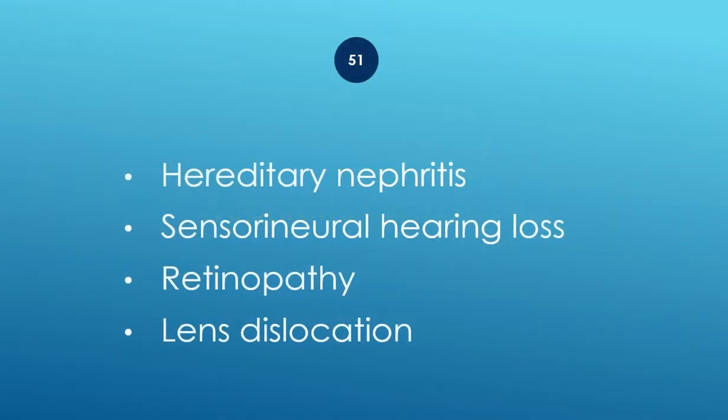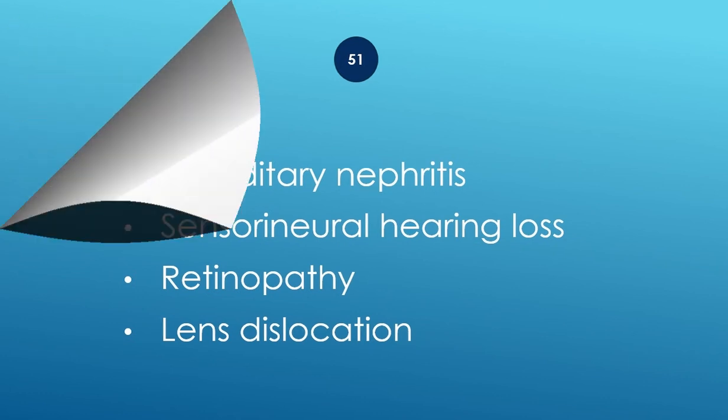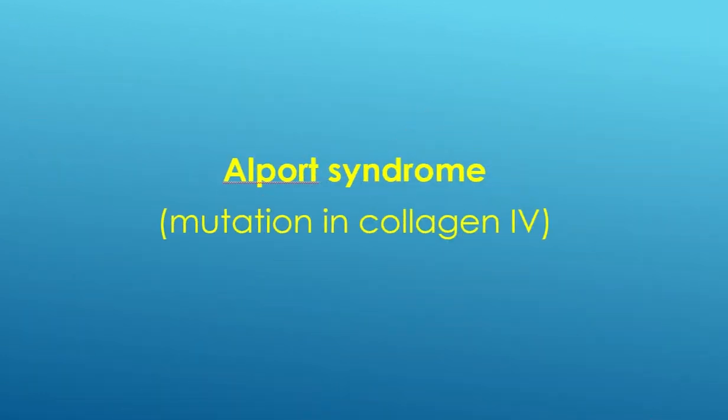Hereditary nephritis, sensorineural hearing loss, retinopathy, and lens dislocation — Alport syndrome, mutation in collagen type 4. Remember: can't pee, can't see, can't hear the high C.